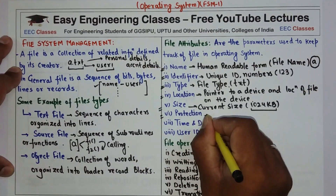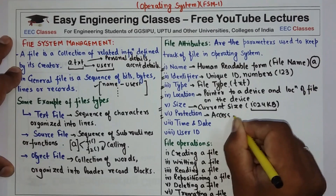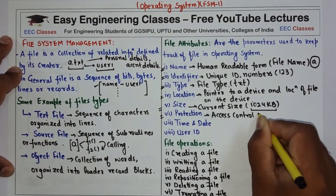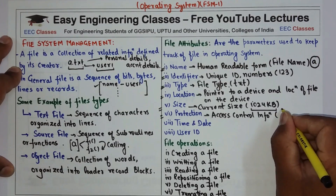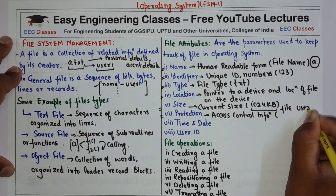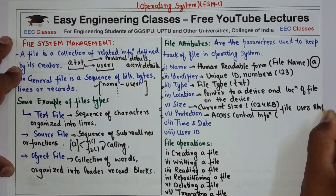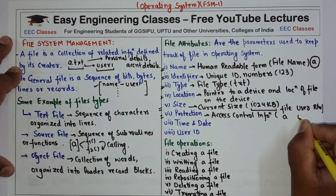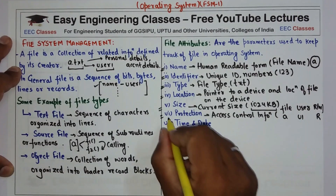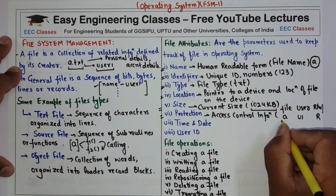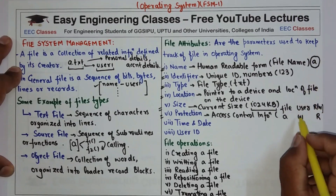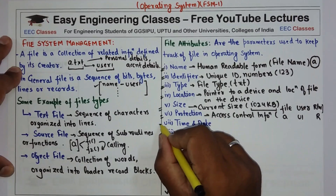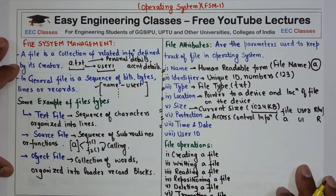The sixth attribute is protection, which is the access control information. For example, if I have a table with file name, user, and read/write access — and it shows file 'a', user u1, read — this means user u1 can only read file 'a' but cannot write to it. Different access control information can be defined for different users and files.